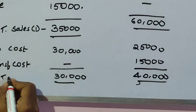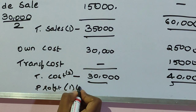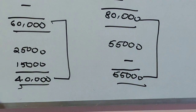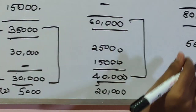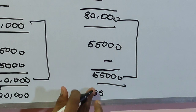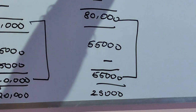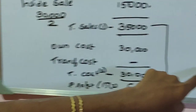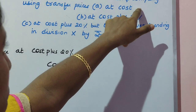Profit equals total sales minus total cost. So: X = 35,000 − 30,000 = 5,000; Y = 60,000 − 40,000 = 20,000; Company = 80,000 − 55,000 = 25,000. The inside sale of 15,000 was taken because transfer is clearly on the basis of cost, and half of X's cost of 30,000 is 15,000. That 15,000 is also the transfer cost charged to Y.